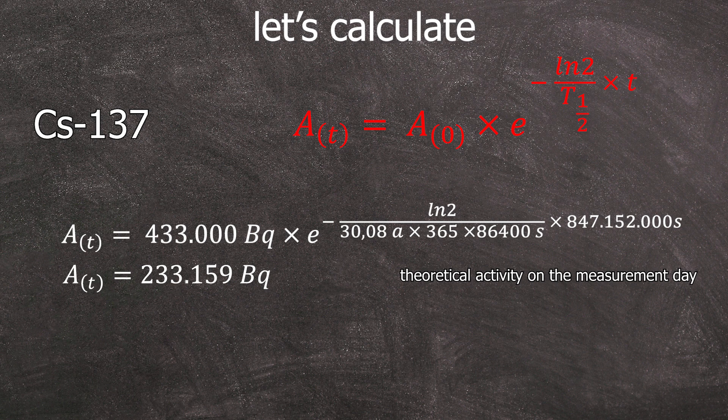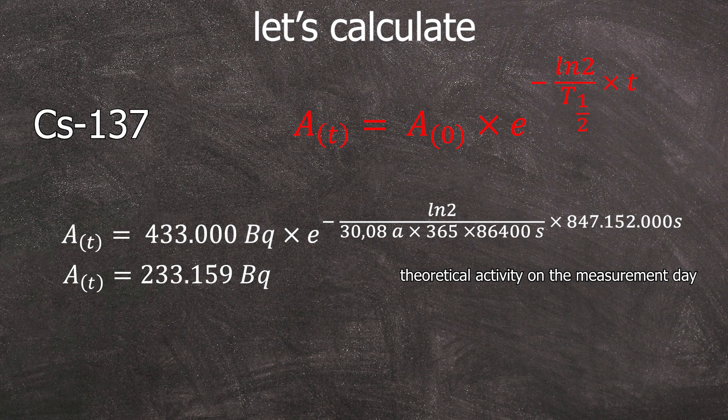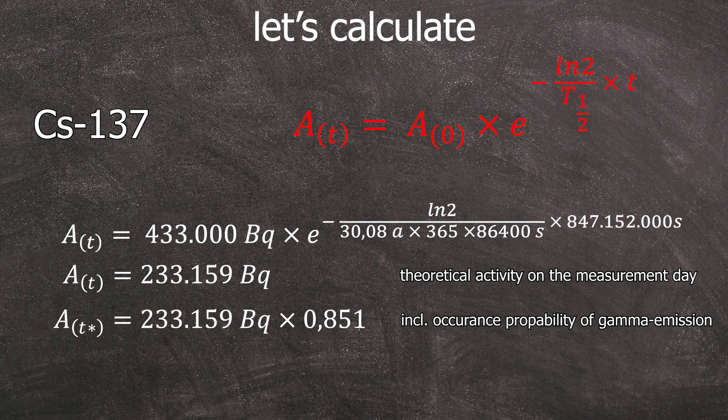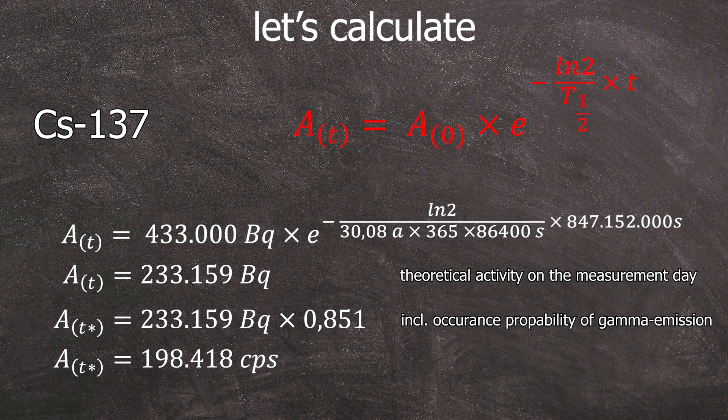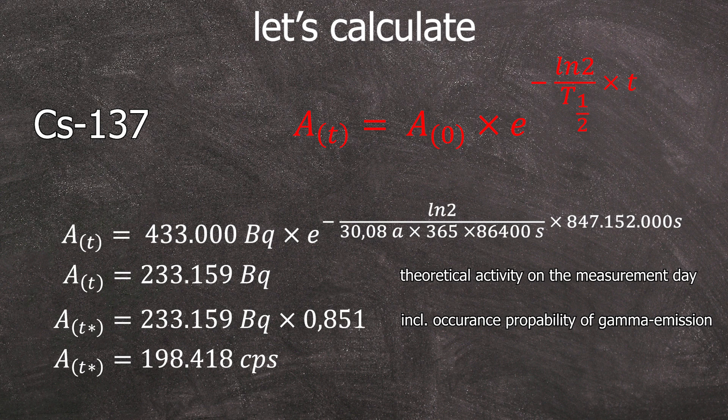This comes out to a theoretical Cesium-137 activity on the measurement day of 233.159 Bq. However, we are measuring gammas and not every decay results in the emission of a 661 keV gamma quantum. So the occurrence probability of 85% also needs to be considered. Meaning that the GeLi should detect 198.418 counts per second. All the values are not rounded due to me being lazy but because there are just no half decays and the measurement accuracy is not high enough for decimal values to make sense.